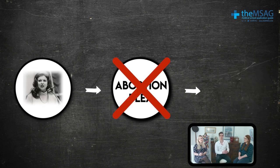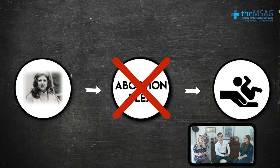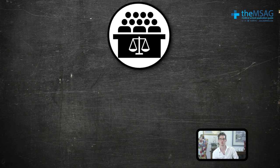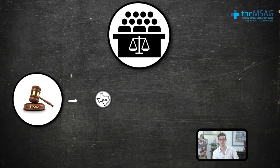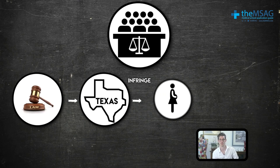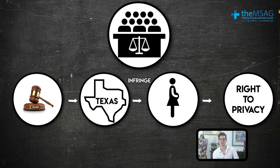Four years later, in 1973, the case made it to the US Supreme Court. They ruled that the laws in Texas did infringe a woman's right to privacy. This started a trimester system in the US and gave women the absolute right to abortion in the first three months of pregnancy.